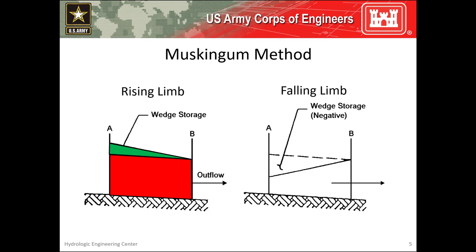Conversely, during the falling stages of a flood wave, the wedge storage is negative and subtracted from the prism storage. This situation is depicted in the right-hand image. Here's prism storage again, and here's wedge storage during the falling limb.